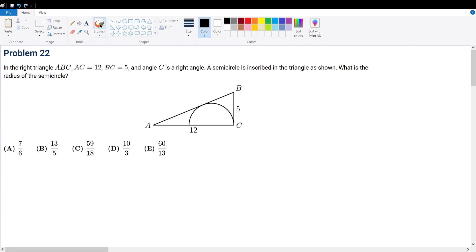Problem 22. In the right triangle ABC, AC is 12, BC is 5, and angle C is a right angle. A semicircle is inscribed in the triangle as shown. What is the radius of the semicircle?